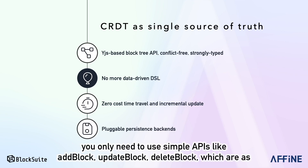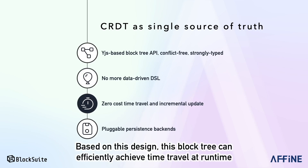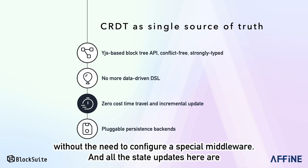To update the state of our block tree, you only need to use simple APIs like add block, update block, delete block, which are as simple as manipulating a to-do list. Based on this design, this block tree can efficiently achieve time travel at runtime without the need to configure special middleware.